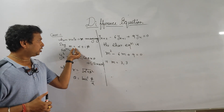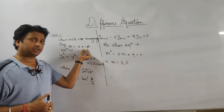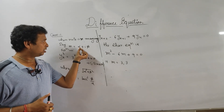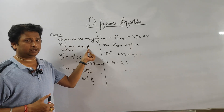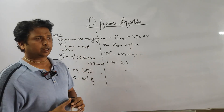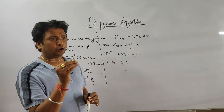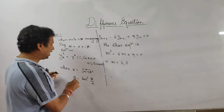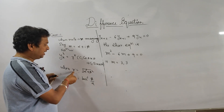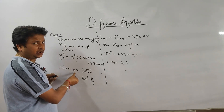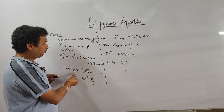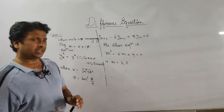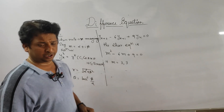When roots come in imaginary form alpha plus/minus iota·beta, calculate the modulus and argument of the complex root. Once you know r and theta, substitute them into the formula r^k times (c1·cos(kθ) plus c2·sin(kθ)) and you have the solution. Let's do one example.